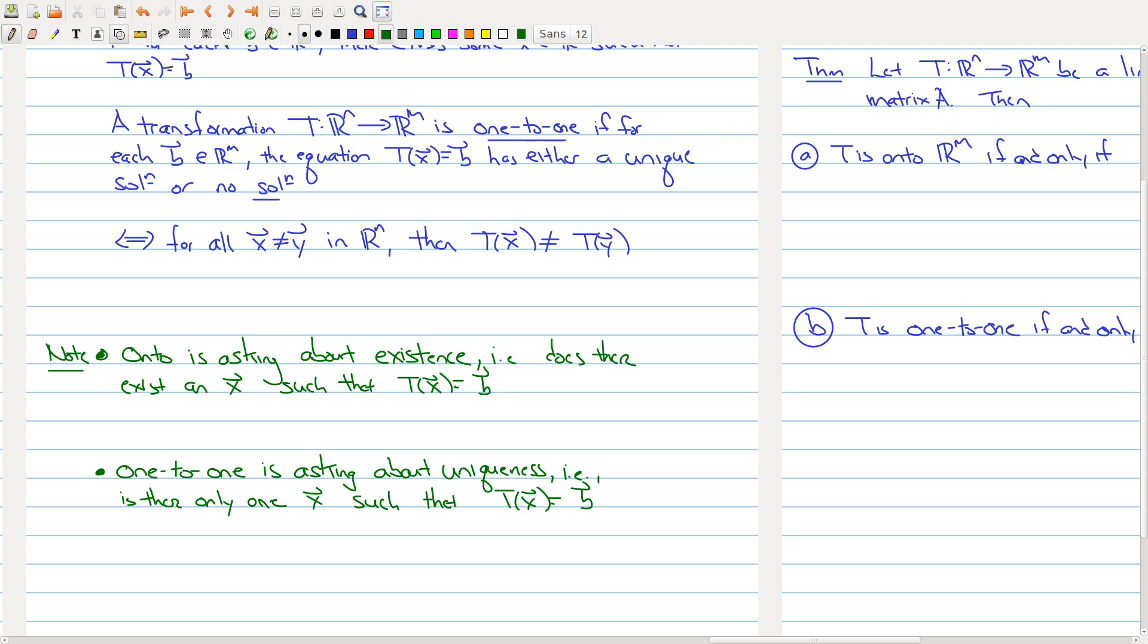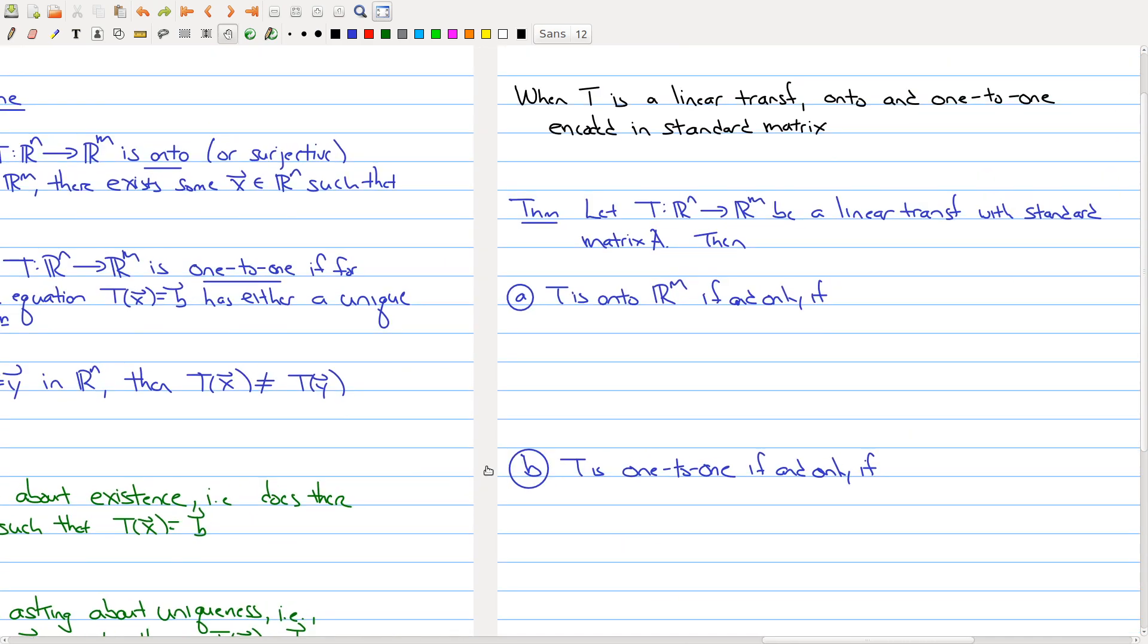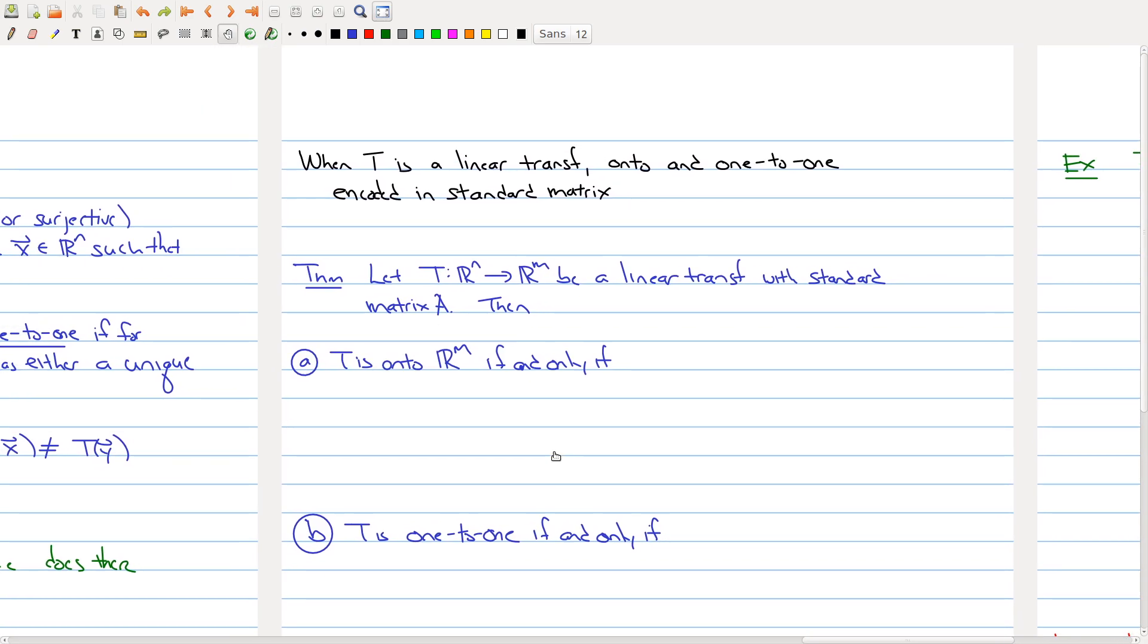Now, I know from experience that these definitions are sometimes a little hard to grasp the first couple of times. But the nice thing is when you're dealing with linear transformations, all the information about being onto and one-to-one is actually encoded in terms of the standard matrix. So the following theorem actually gives you this characterization. So say that you have a linear transformation. And the point to the first part of today's lecture is that you can attach to that linear transformation a standard matrix.